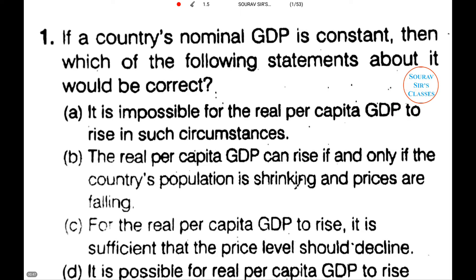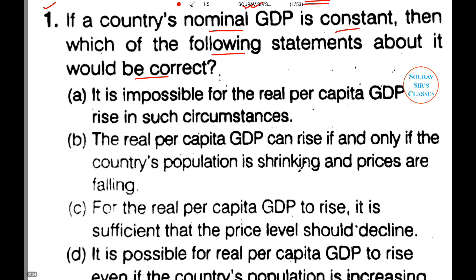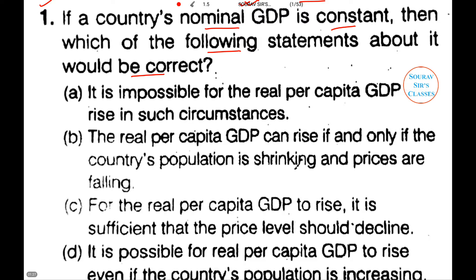The first question has been taken from the year 2015, and it is the first question from Section A. The question reads: if a country's nominal GDP is constant, then which of the following statements about it would be correct?